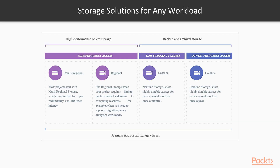In the cloud we have different kinds of storage. In Google Cloud we have two types of object storage: high-performance and storage types for backup and archival. Multi-regional storage, which most projects start with, is optimized for geo-redundancy and end-user latency. We use regional storage when your project requires higher performance local access to computing resources, for example when you need support for high-frequency analytics workloads.